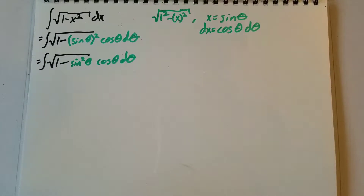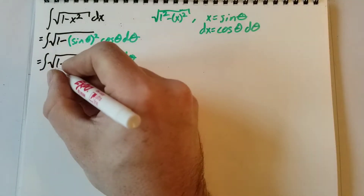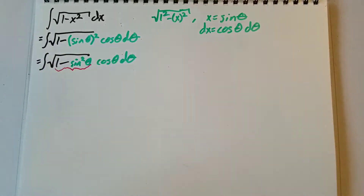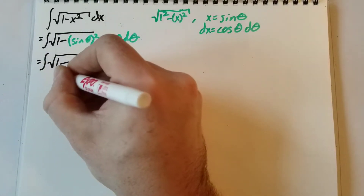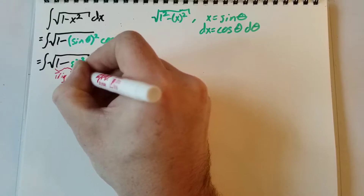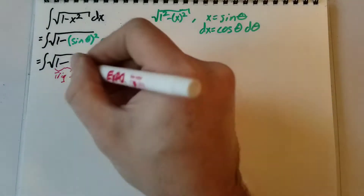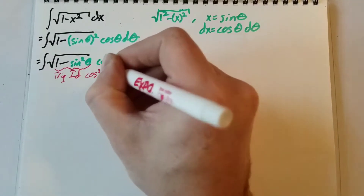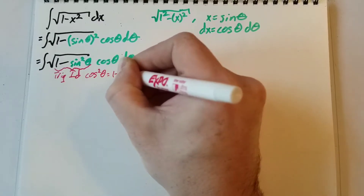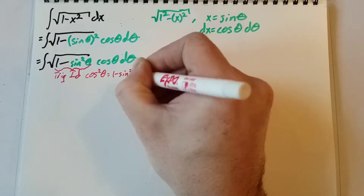Looking at the radical, we notice we can use a trig identity. That identity says that cosine squared theta equals 1 minus sine squared theta.